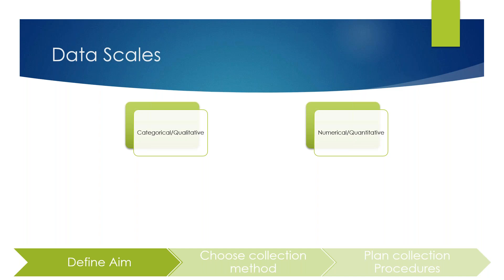If your problem statement is to measure something precisely or gain statistical insights, you collect quantitative data. If your aim is to explore different ideas, understand user experience, or understand the sentiments of people regarding your product or services, that is when you collect qualitative data. Both types are further categorized — qualitative into nominal and ordinal, and quantitative into interval and ratio.